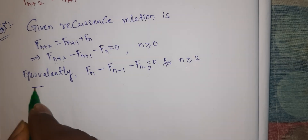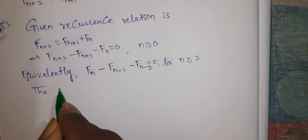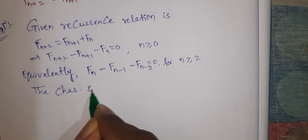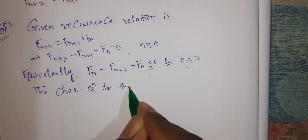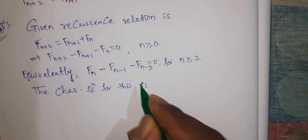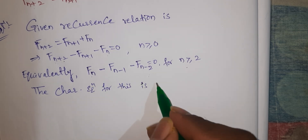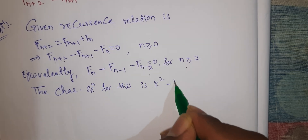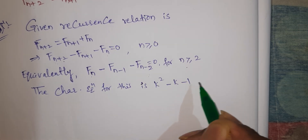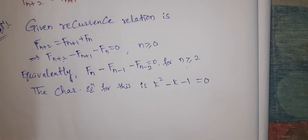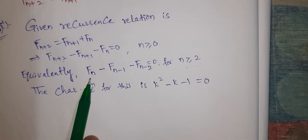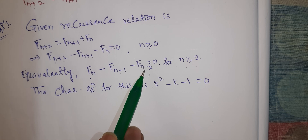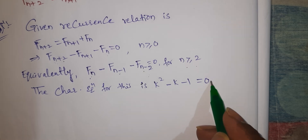Now we will find the characteristic equation for this. The characteristic equation is k² - k - 1 = 0, where k is a constant.